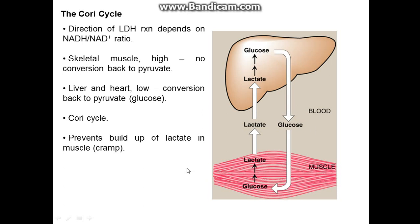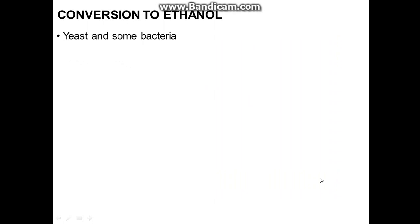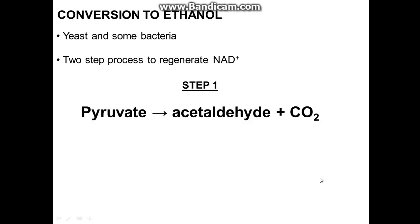The direction of the cycle depends on the NADH to NAD+ ratio. It's different in the liver and the muscle, as one is using more oxygen than the other. For ethanol fermentation — students are probably quite familiar with this one — there are two steps to regenerate NAD+, as we did with lactate dehydrogenase. First: pyruvate to acetaldehyde plus CO2.